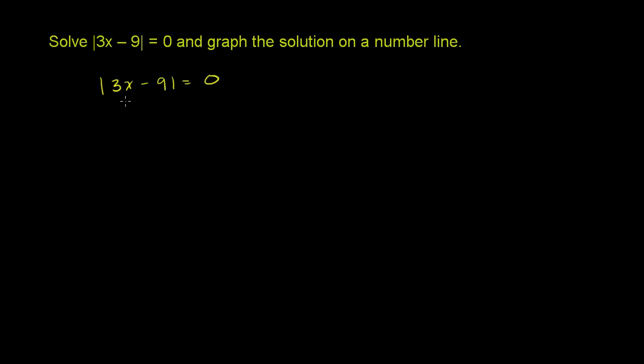So if the absolute value of something is equal to 0, what can that something be? Well, the only thing that you could take the absolute value of and get 0 is 0. So that something has to be 0 inside of the absolute value sign.